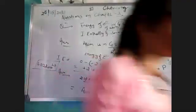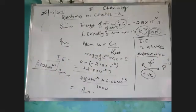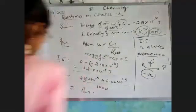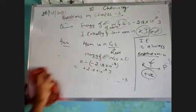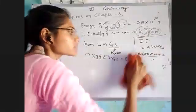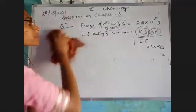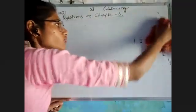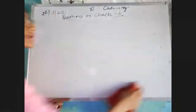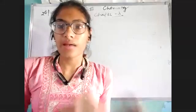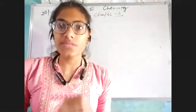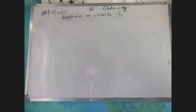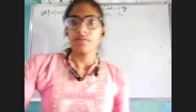The next questions in this chapter are based on trends we have studied — whether ionization energy, atomic radii, electron gain enthalpy, or metallic/non-metallic character. We have studied how these properties vary down a group and along a period. These questions are all based on those trends, so please revise the first two chapters and keep your notes ready.